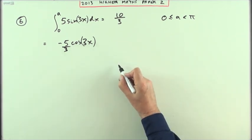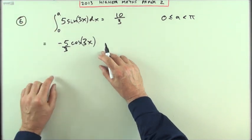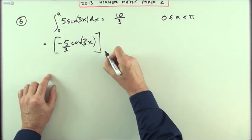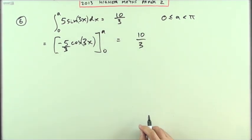There's no point putting in plus c because I'm going to evaluate it twice. I'm going to work it out at a and work it out at 0. Now it's just the case of what will I do with that negative 5 upon 3 when I work it out and this answer should come to 10 upon 3.